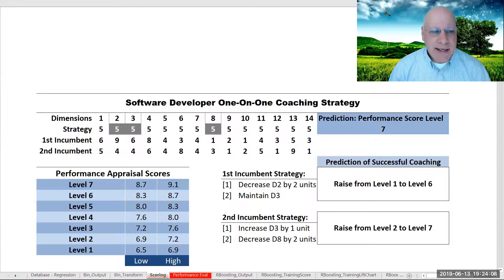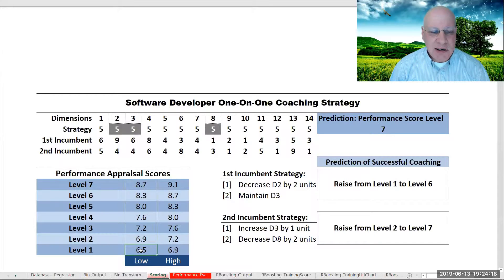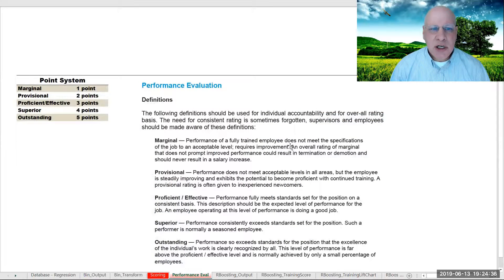They also had performance appraisal scores, and when we looked at these scores, there were seven different levels of performance starting at 6.5 as the lowest score in level 1, all the way up to level 7 which ended at 9.1. That's common in certain positions where a performance evaluation will be a 4, 5, 6, 7 point system like the ratings you see on the screen.